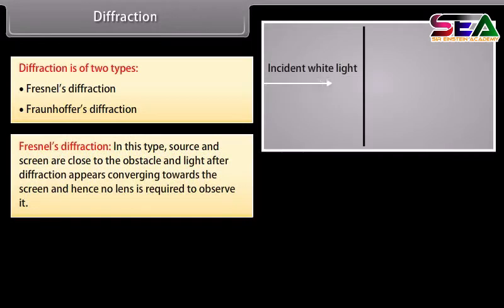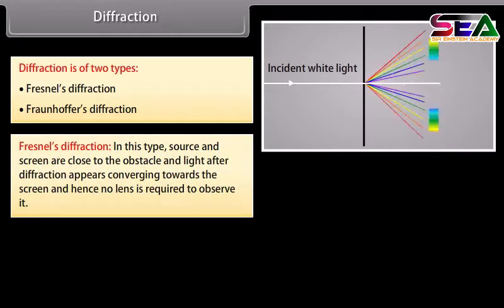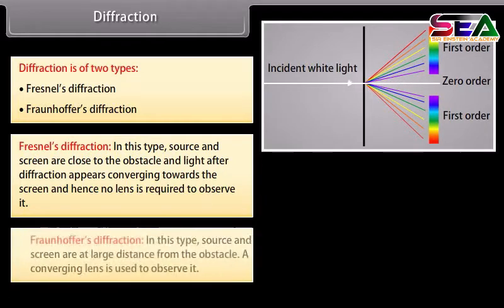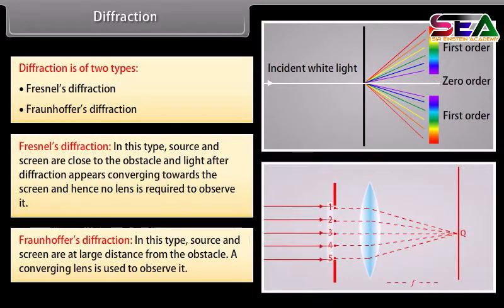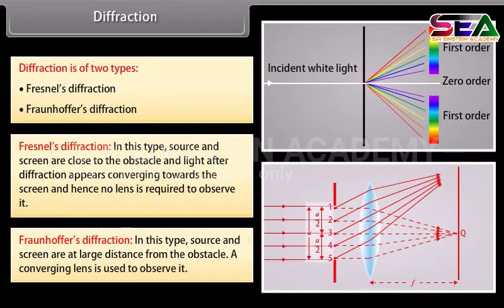Diffraction is of two types: Fresnel's diffraction and Fraunhofer's diffraction. In Fresnel's diffraction, source and screen are close to the obstacle and light after diffraction appears converging towards the screen, and hence no lens is required to observe it. In Fraunhofer's diffraction, source and screen are at large distance from the obstacle. A converging lens is used to observe it.